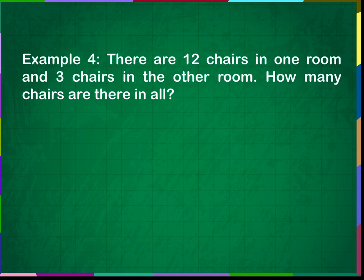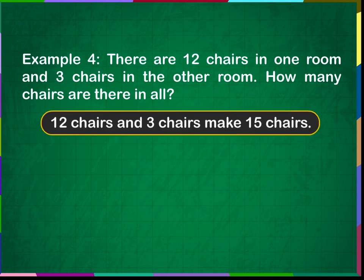Example 4: There are 12 chairs in one room and 3 chairs in another room. How many chairs are there in all? 12 chairs and 3 chairs make 15 chairs. 12 plus 3 is equal to 15. There are 15 chairs in all.